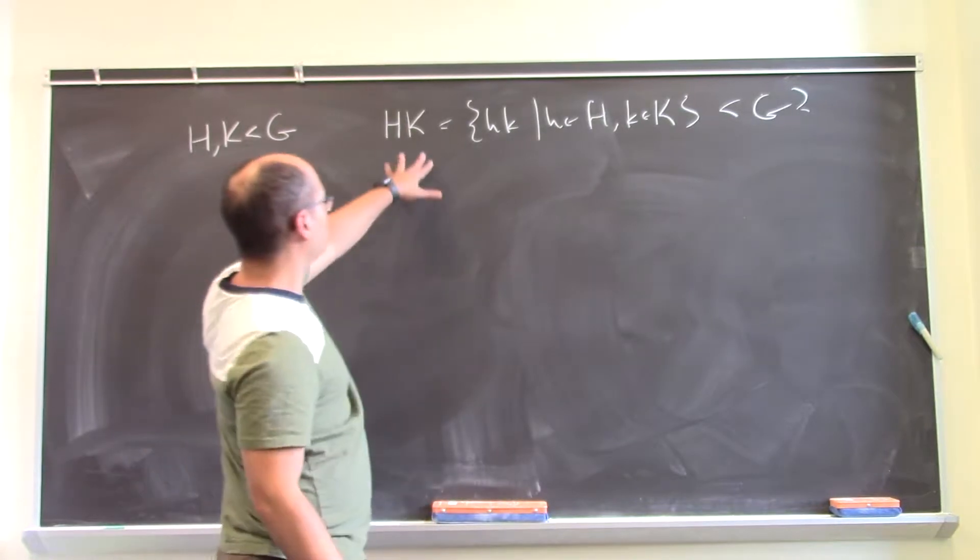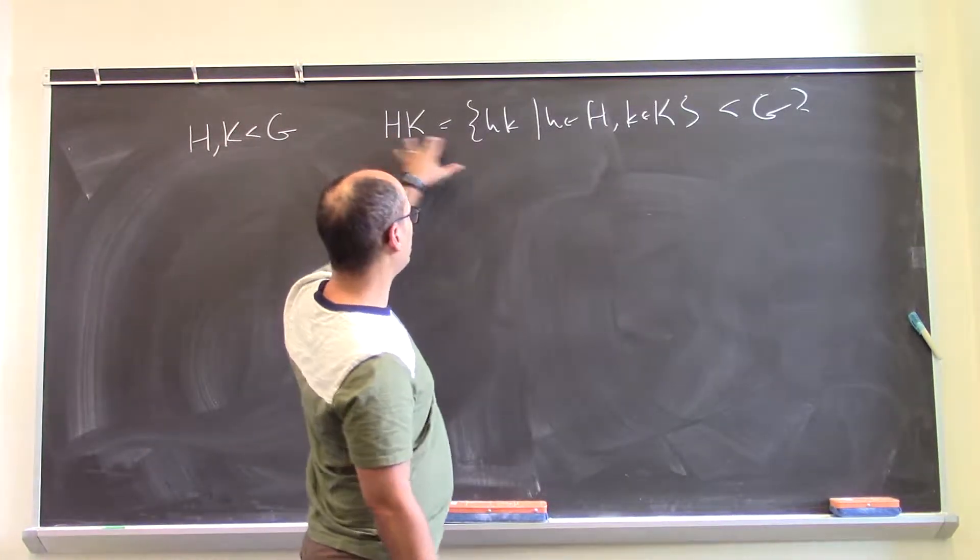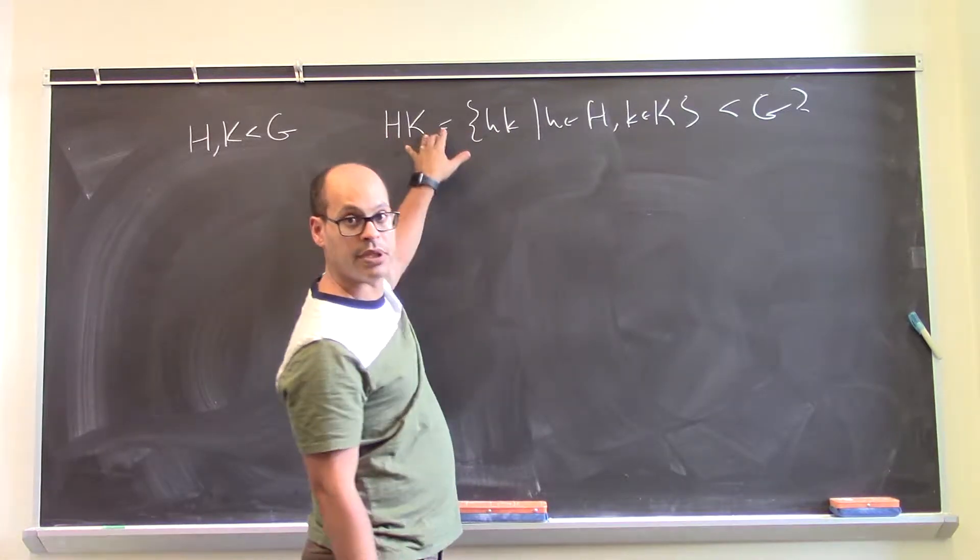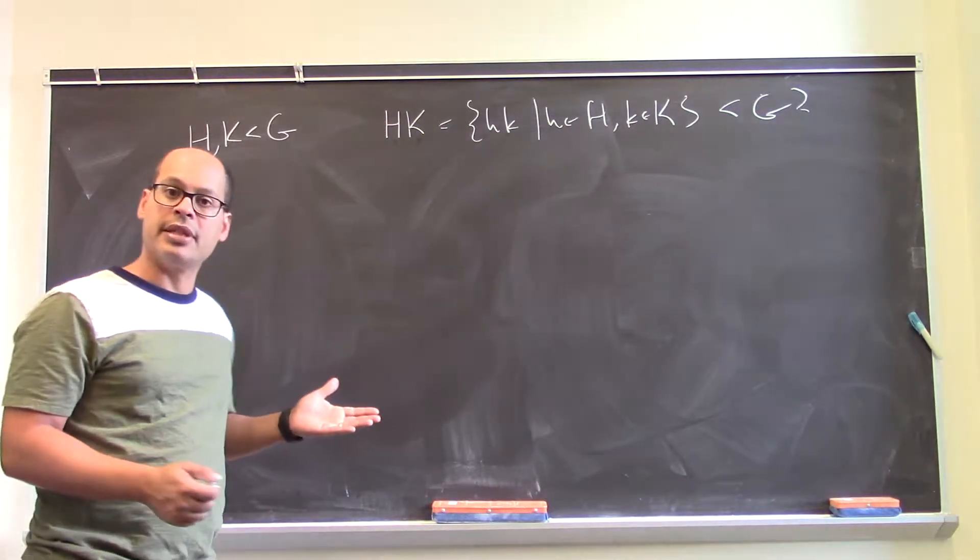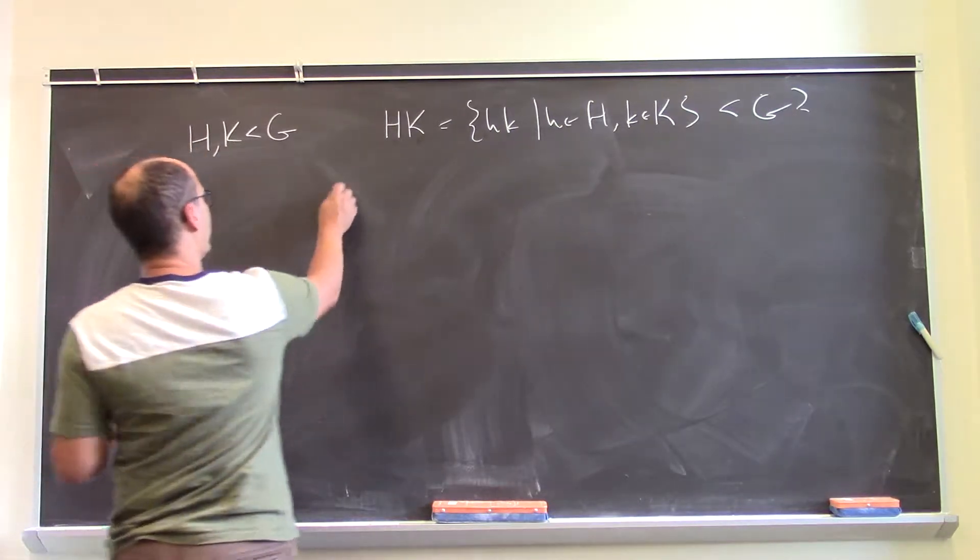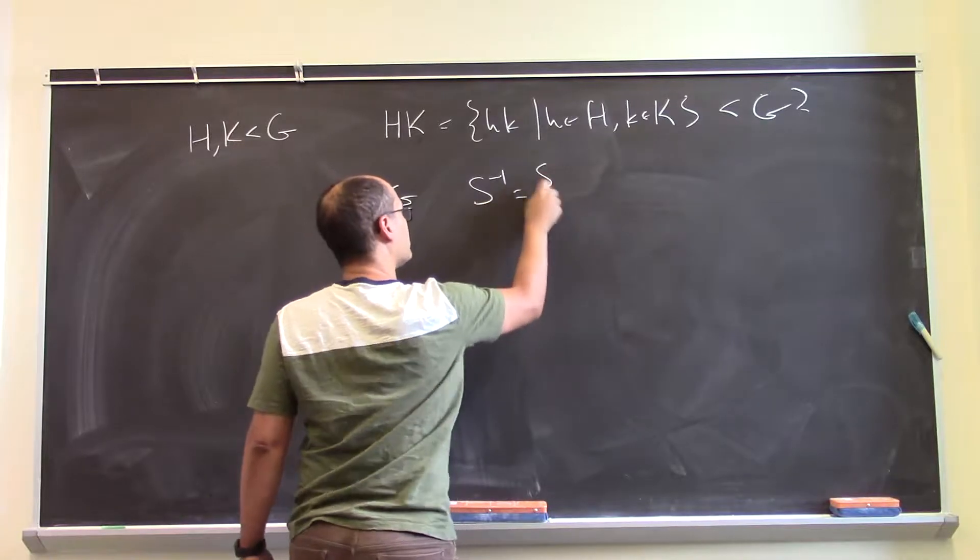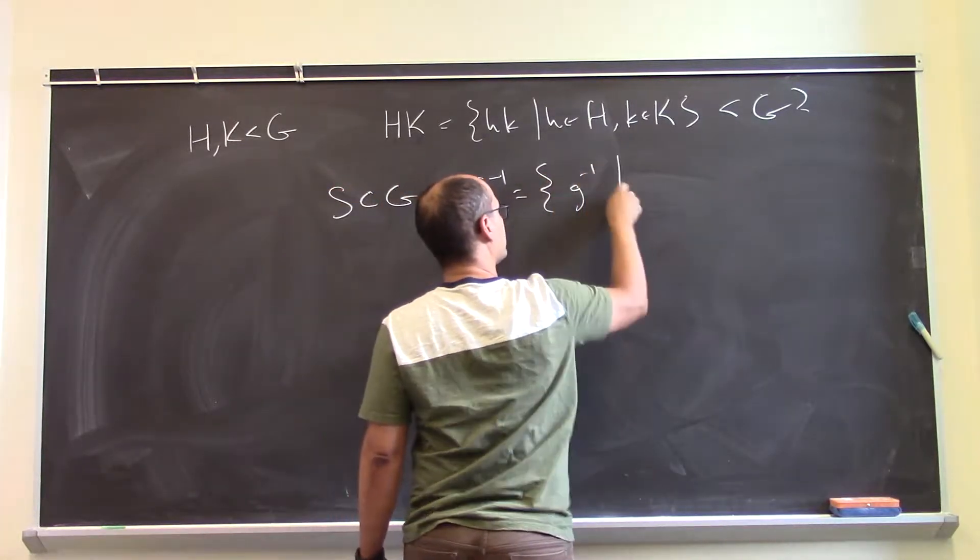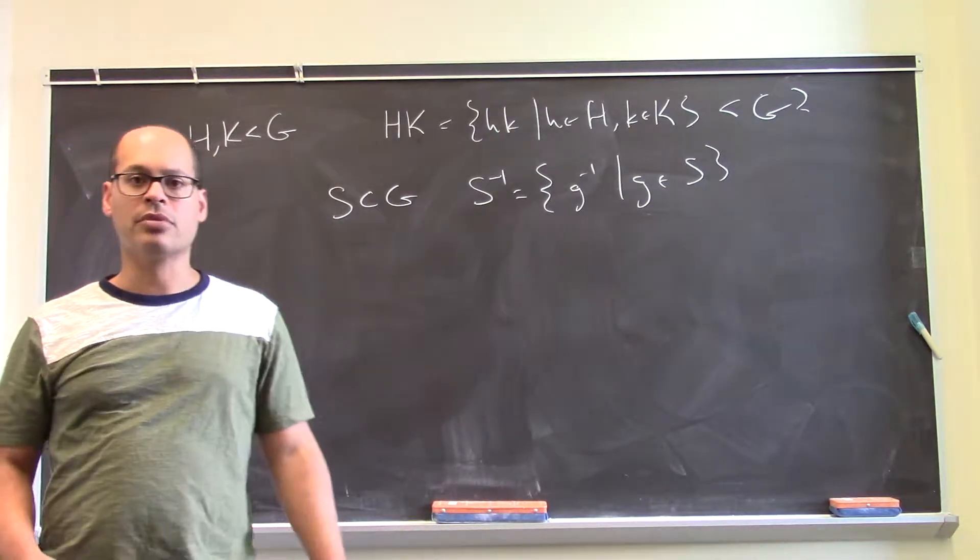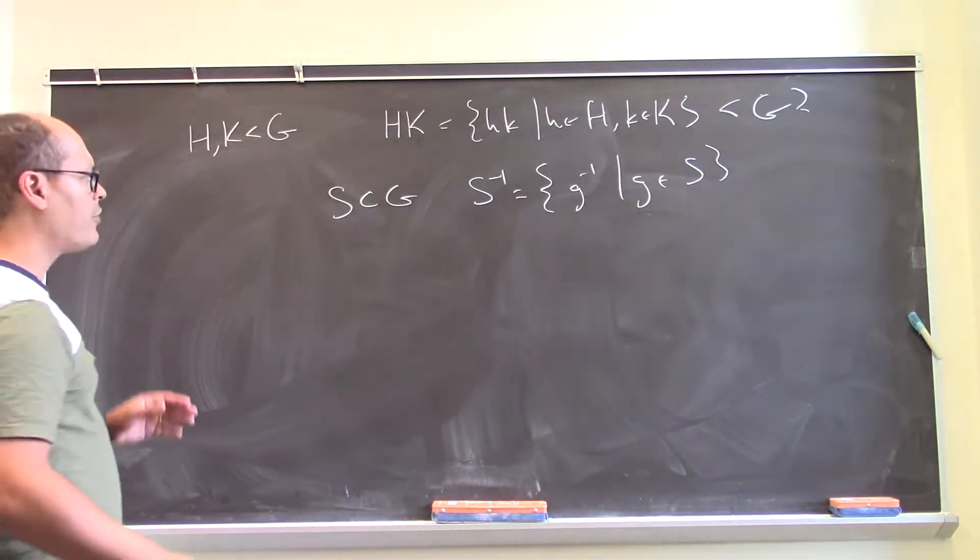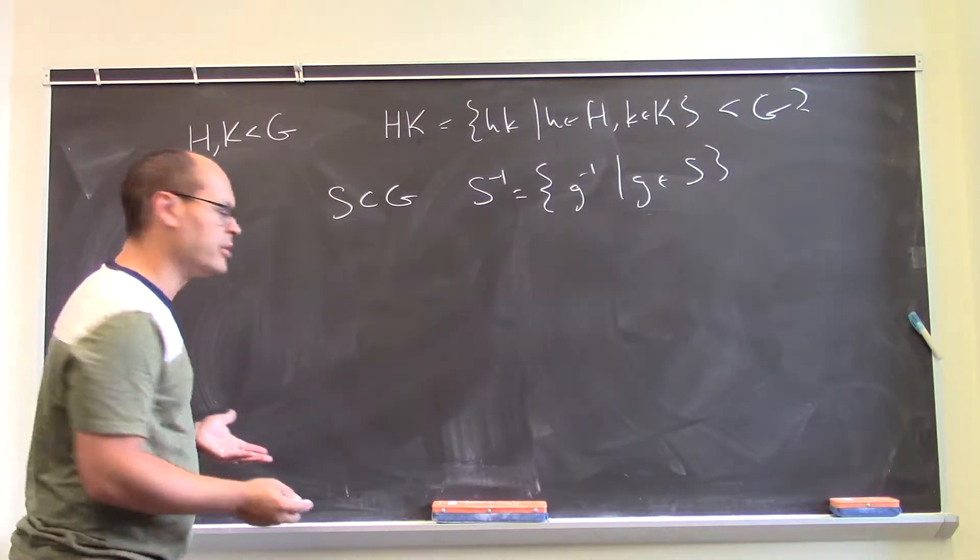So when I juxtapose two subsets of the group like this, I'm talking about products of things in one times things in the other. I'll use that for both subgroups but just arbitrary subsets of a group as well. If I have some subset of a group, I'm going to write capital S inverse to be the set of g inverse such that g is in S. So you can do the same kind of notation with these inverses. So from this language, let's just say briefly, what does it mean to even be a subgroup in the first place?